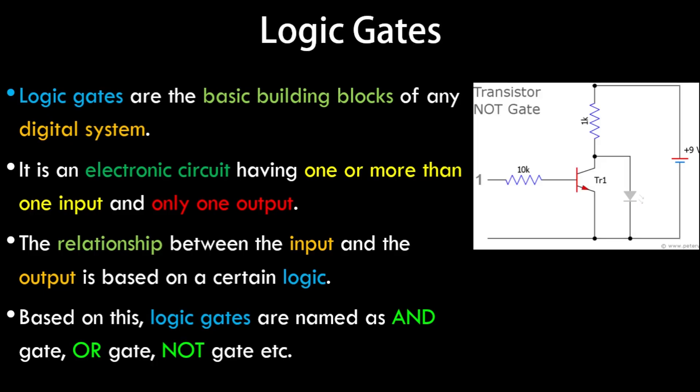As you can see, it's a transistor NOT gate — we have a resistor as well as transistor TR1 in the center. You can also see the LED glowing. When the input is low, the LED glows. Similarly, other logic gates have similar circuit designs.